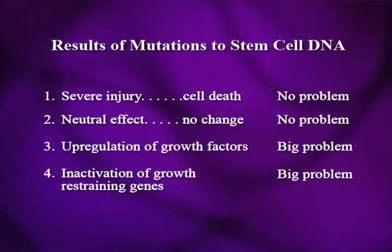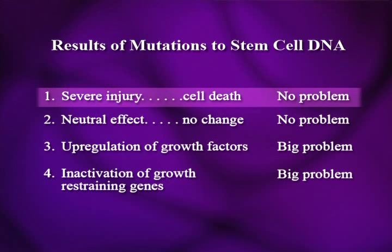All these damage effects that happen to the DNA are going to affect the information transmitted to the next generation as the stem cell moves up, trying to differentiate and become a functioning cell. If a stem cell gets severe injury to the DNA, the cell is going to die and drop out of the replicating population, so it won't have any effect on the patient.